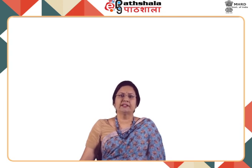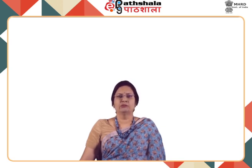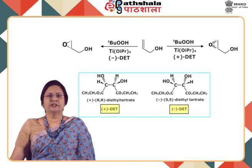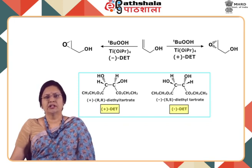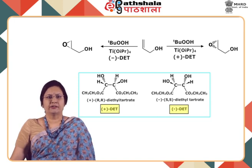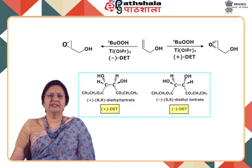Professor Sharpless extended this work and was successful in transforming the diastereomeric epoxide formation from allyl alcohols to an enantioselective process by using a chiral ligand with the transition metal catalyst. He used an oxidizing agent — hydroperoxide, most commonly tertiary butyl hydroperoxide — and the catalyst used is isopropyloxy titanium. The chiral ligand used is enantiopure dialkyl tartrate, either (+)-diethyl tartrate or (−)-diethyl tartrate.